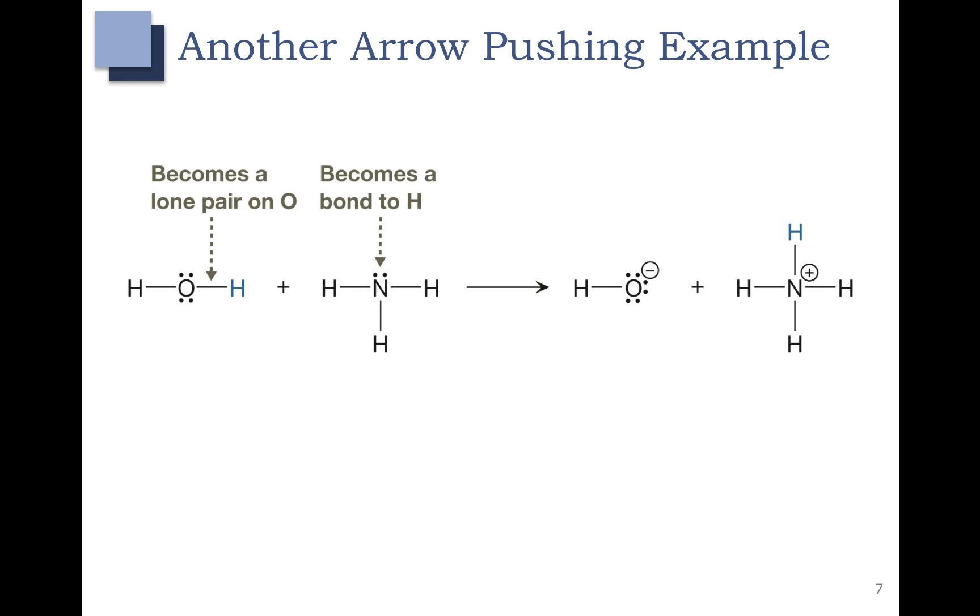Let's look at another arrow pushing example. In this example here, you can see that the lone pair on the nitrogen is lost, and it is being used to form a bond to the hydrogen over here. You can see the blue hydrogen on the left that's attached to water is now bonded to the nitrogen. So let's draw that out. That lone pair there I'm going to cover in blue, and that's going to form a bond to the blue hydrogen.